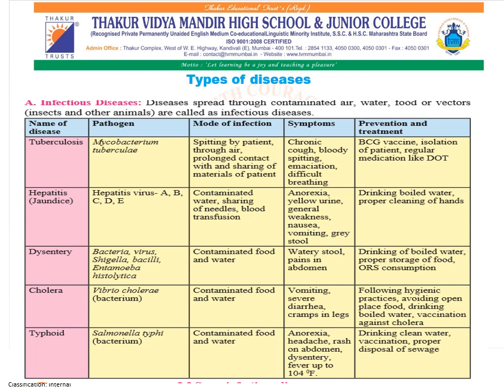The first disease here is tuberculosis, where the pathogen is Mycobacterium tuberculae. The mode of infection is spitting by the patient through the air, and prolonged contact with or sharing of materials of the patient. Symptoms can be chronic cough, bloody spitting, emaciation, and difficult breathing. Prevention and treatment include BCG vaccination, isolation of the patient, and regular medication like DOT.